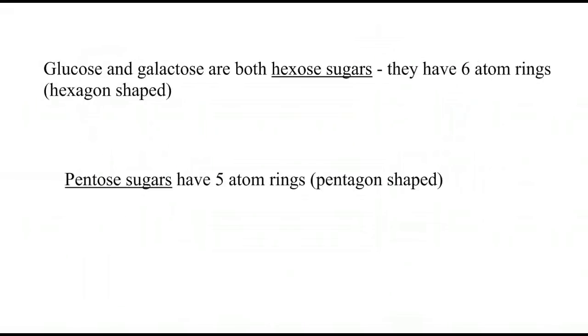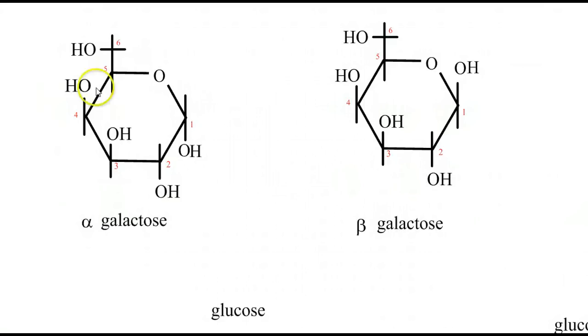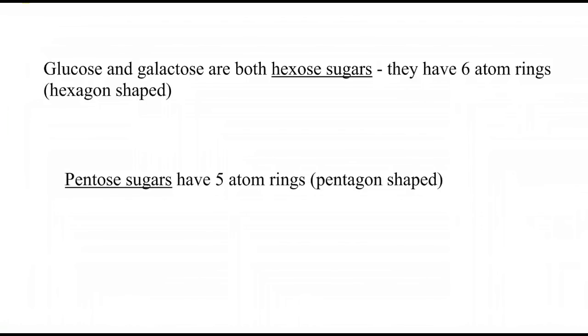Glucose and galactose are both what we call hexose sugars because they have six atom rings - they're hexagon-shaped, and that's pretty obvious here. There's also another type of sugar - actually there's lots of types - but one we're going to look at now are the pentose sugars, and these have a five-membered ring, which is pentagon-shaped.